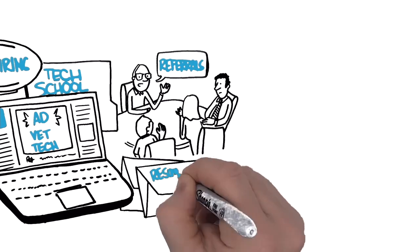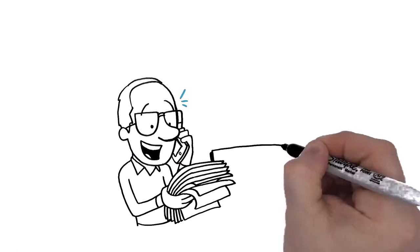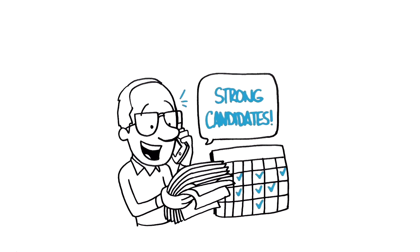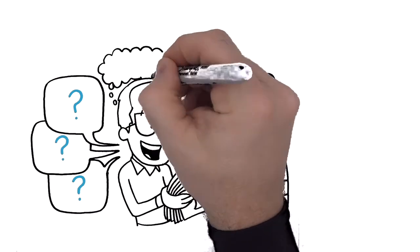Dan collects all of the resumes that are submitted. Dan receives a good response. He feels seven of the candidates are strong candidates, and he schedules phone interviews with them. He asks each of them the same behavior-based questions and keeps his must-haves in mind.